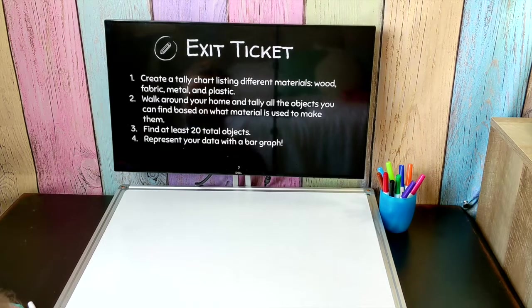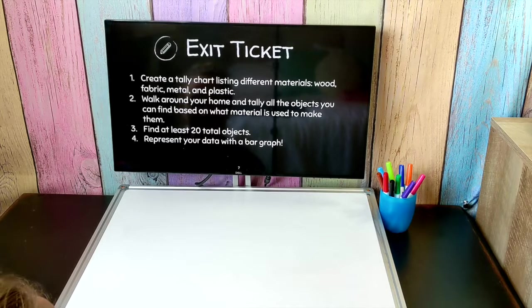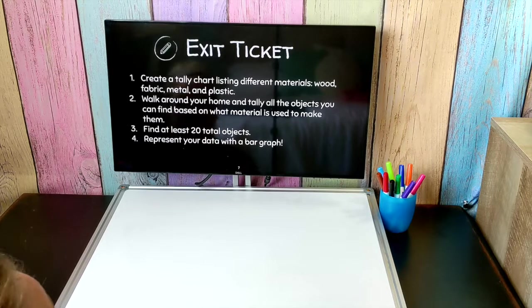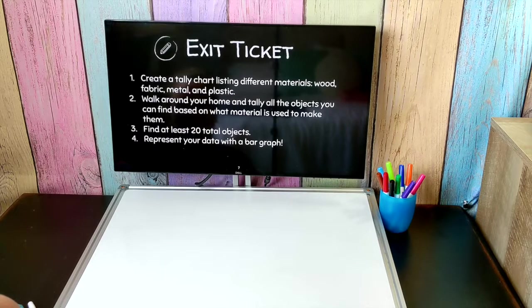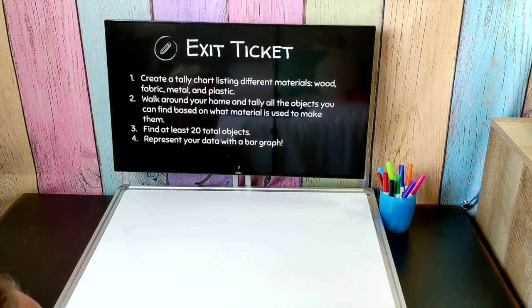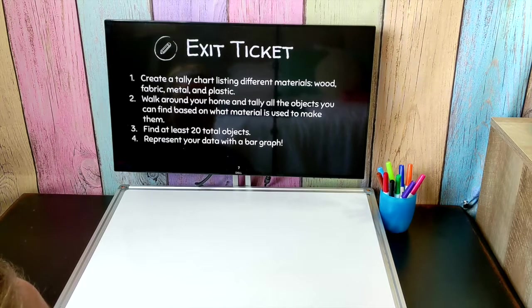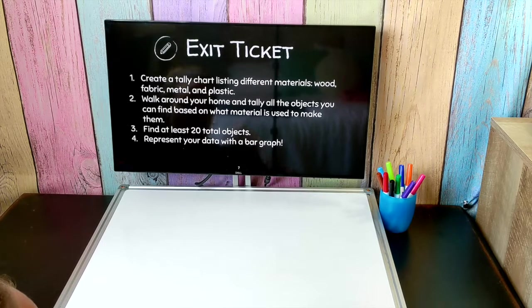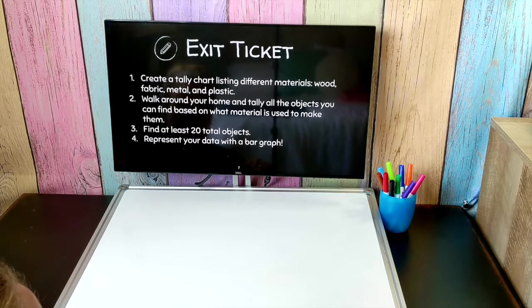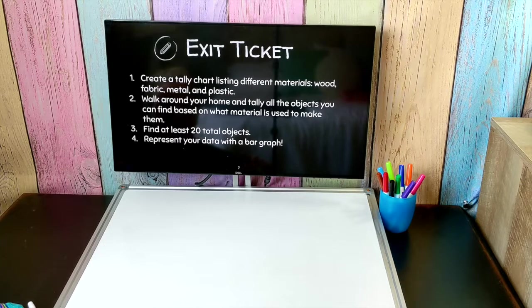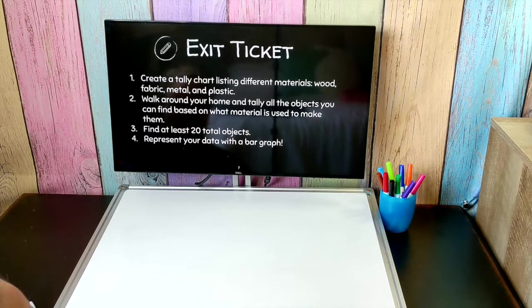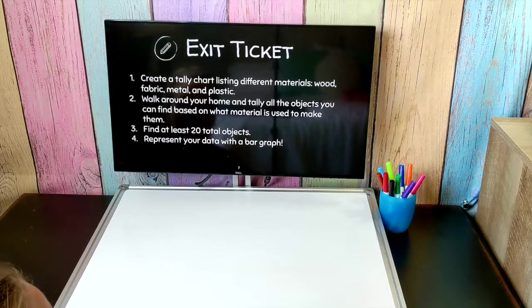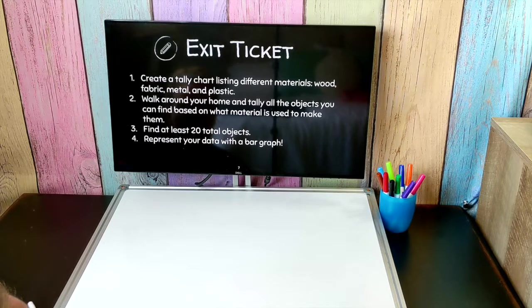As your exit ticket I want you to create a tally chart on a piece of paper and list the following materials: wood, fabric, metal, and plastic. Now walk around your home or outside and tally all of the objects you can find based on what material is used to make it. Like my desk for example is made of wood, so I would tally my desk in the wood row. I want you to find at least 20 objects to include on your tally chart, then represent that data with a bar graph. Pause this video here if you need to. Submit your answers to your teacher.